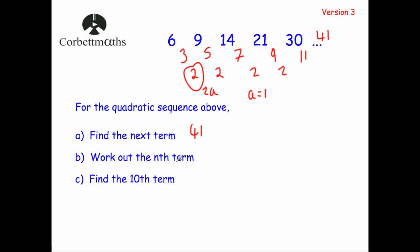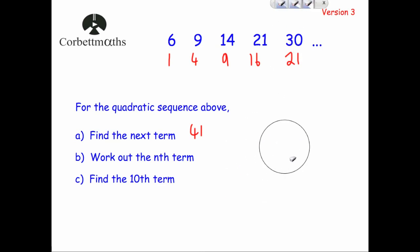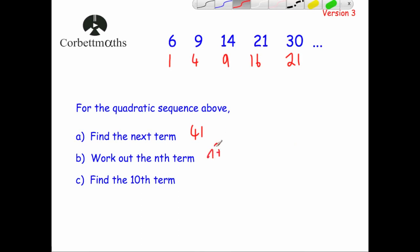Since a = 1, the nth term is in the form n² + bn + c. We compare the n² sequence to our sequence. The n² sequence gives 1, 4, 9, 16 — and as you notice, our sequence is exactly 5 bigger every single time. So it's just n² + 5. The nth term is n² + 5.